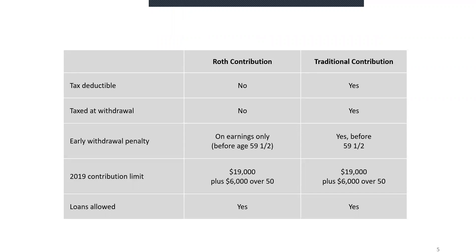This chart highlights the key differences. Roth contributions are not tax deductible, not taxed at withdrawal, and the early withdrawal penalty applies only to earnings since you've already paid taxes. The contribution limit is $19,000 plus $6,000, and loans are allowed. Traditional contributions are tax deductible — which has the potential to lower your taxable income — taxed at withdrawal, with an early withdrawal penalty before age 59½ on all of it. The contribution limit and loan allowances are the same.